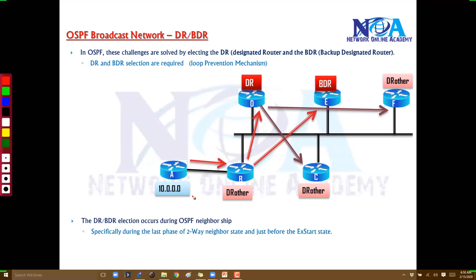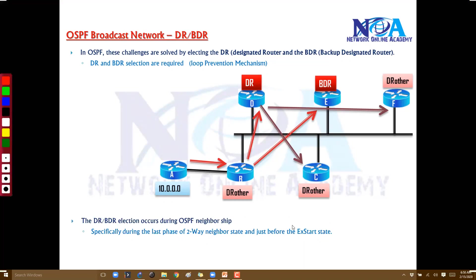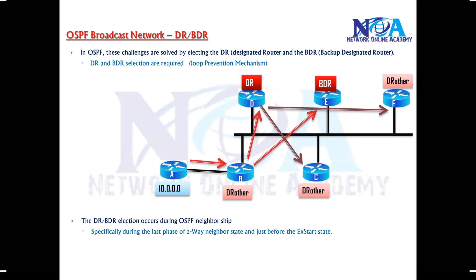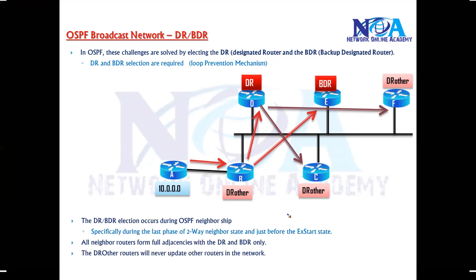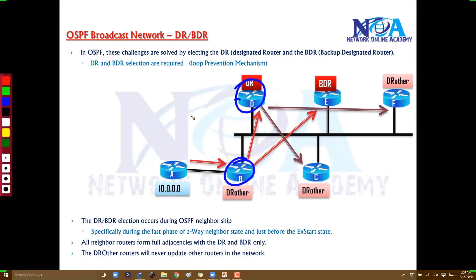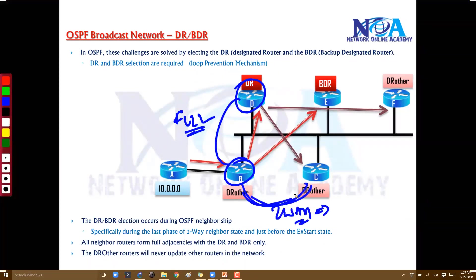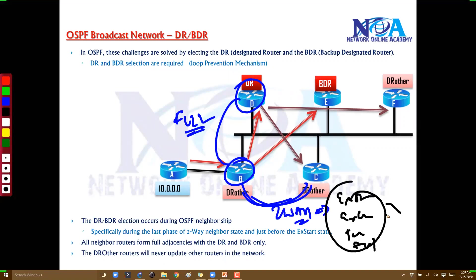The election occurs between the two-way and start stages of OSPF neighbor states, only when the network type is identified as broadcast. All neighbor routers form full adjacencies — all seven stages — with DR and BDR only. DR Others will only go up to the two-way stage with each other, meaning there is no ExStart, Exchange, Loading, or Full stage between DR Other routers.